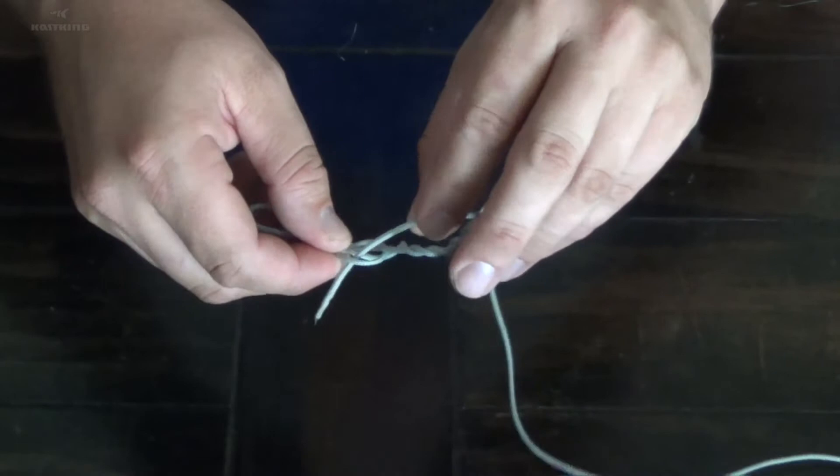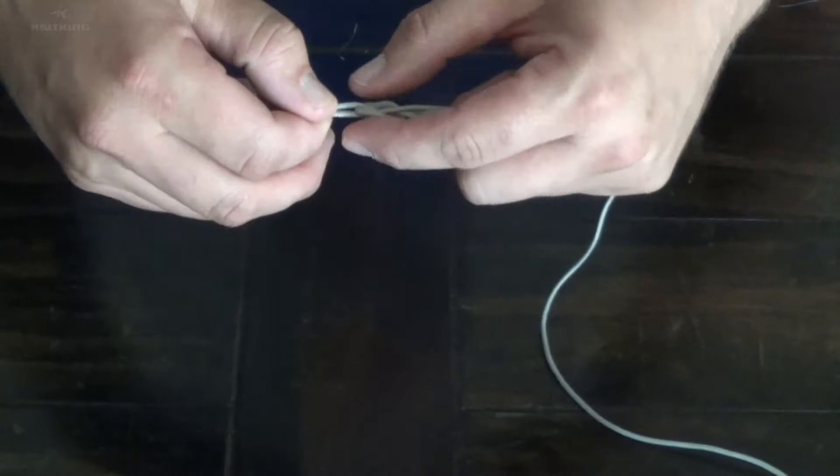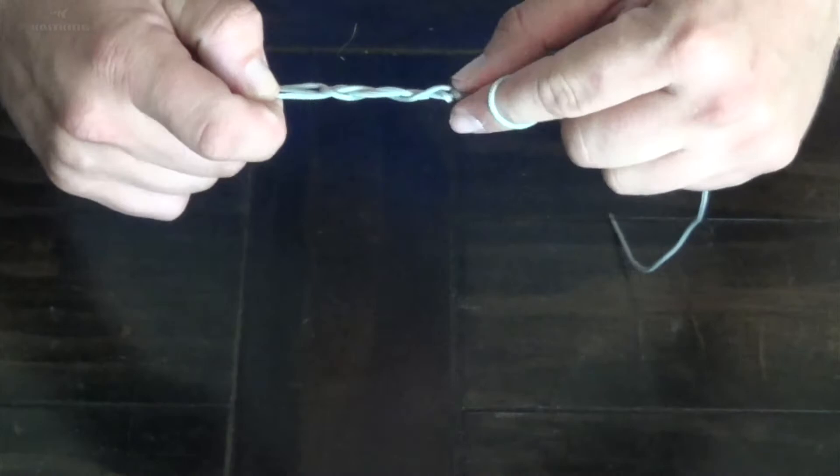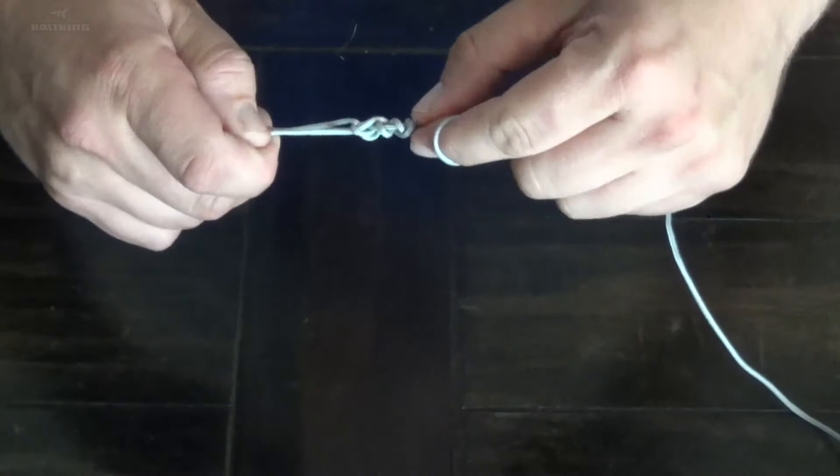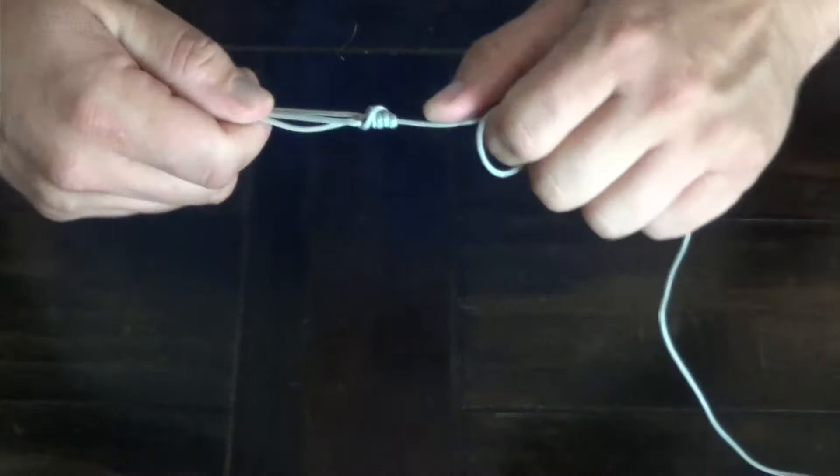So back through the loop, and at this point you're going to want to wet your line and now you can slowly pull down on that tag end and you can kind of work it down with your fingers. Then you can really wrench on it and cinch that down.